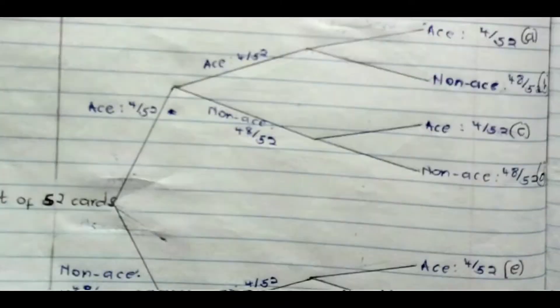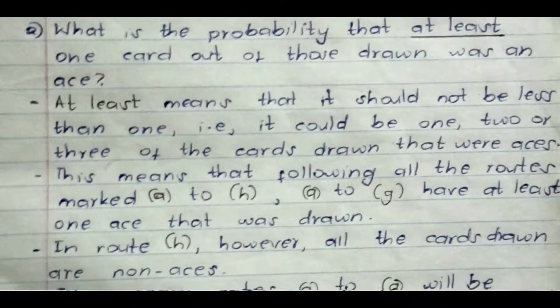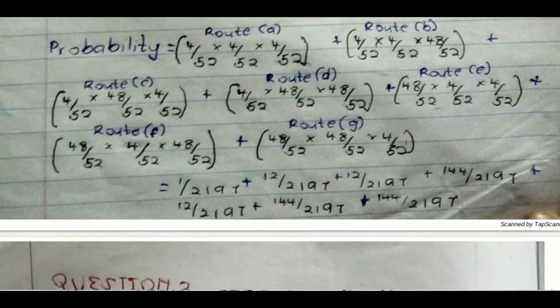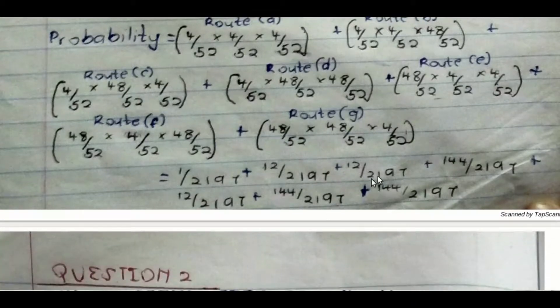So that means we will pick all those routes up to G. And that is what brings about this particular probability here. Route A plus route B plus route C all the way, and that is what brings about this result. The accuracy of that can be verified. This is the formula generally.